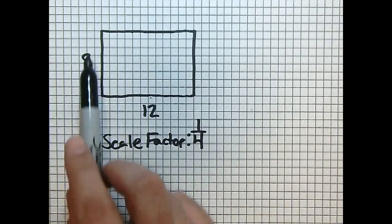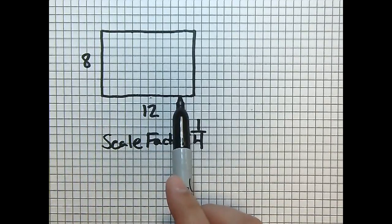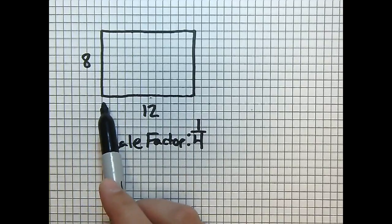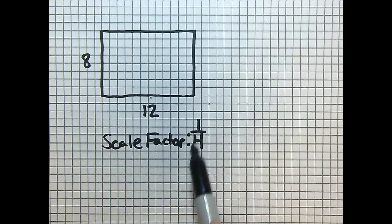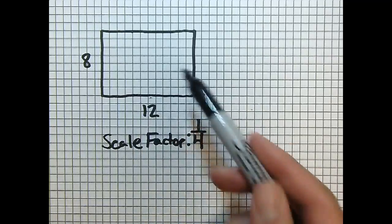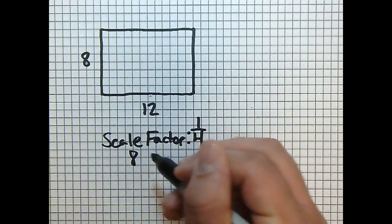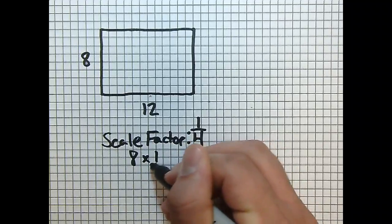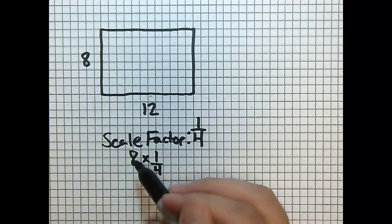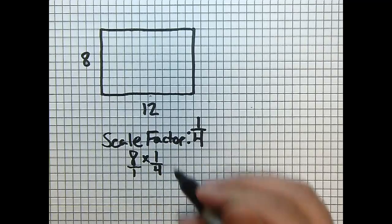So we have an 8 by 12 rectangle, and we want to go ahead and use our scale factor of 1 fourth. Let's see what happens to the sides. So I'm going to start with our 8 unit side and multiply it by 1 fourth. Remember, whole numbers, go ahead and place it over 1.